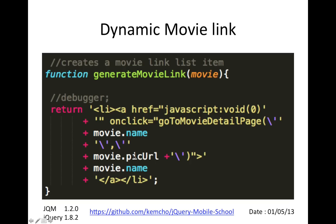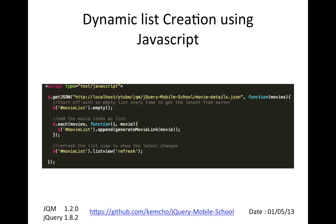The generateMovieLink function creates a list item and an anchor tag within it, which has an onclick method that calls a JavaScript function to create the dynamic page. So we don't have any static HTML anymore — no static HTML for the list, no static HTML for the page. Everything is going to be created using JavaScript. We pass in the movie name and the picture URL, and then this dynamic list is created.